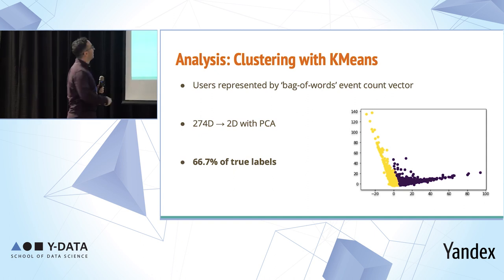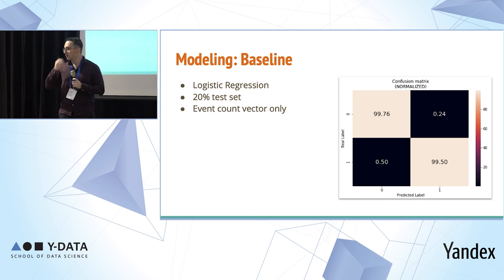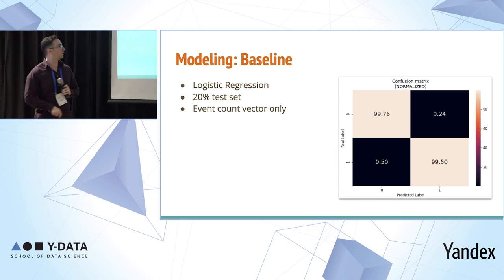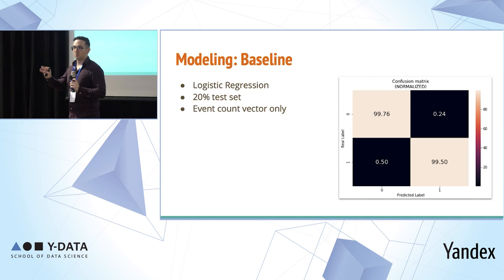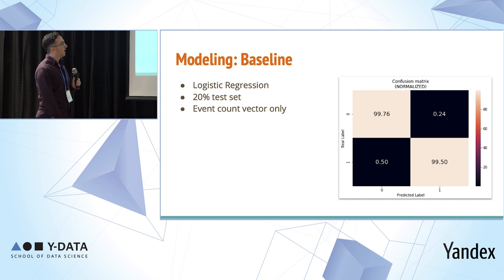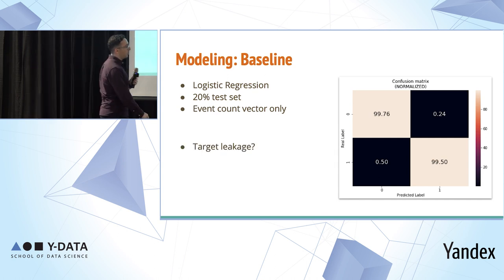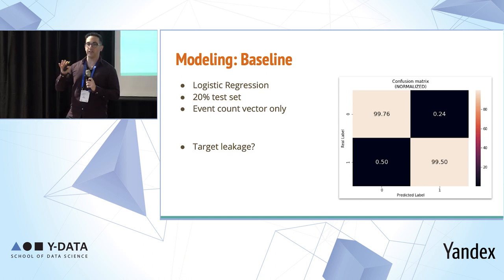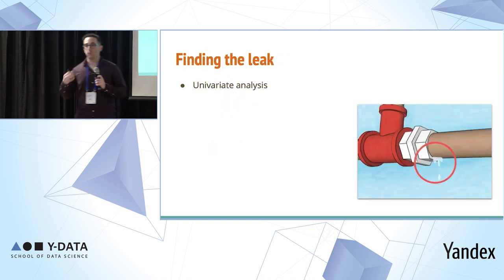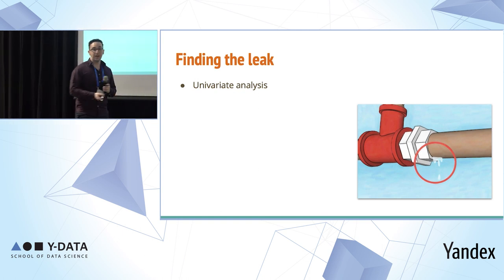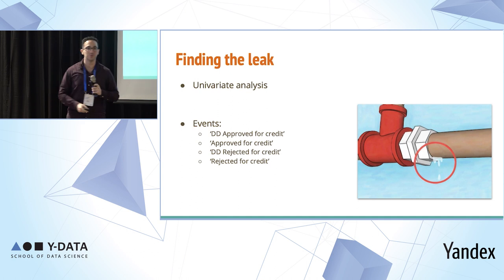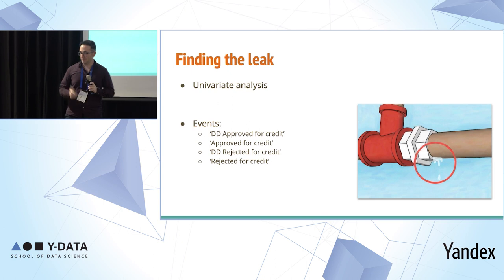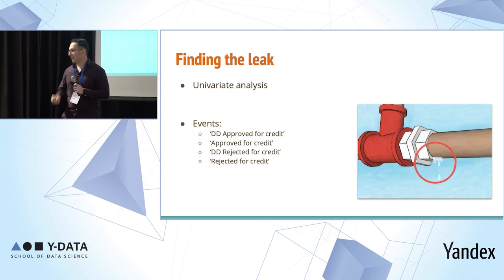We created a baseline model using logistic regression with the event count vector, and a 20% test set. The results showed 99.7% and 99.5% accuracy on the two labels — which immediately suggested target leakage. We did univariate analysis on each feature and found four features that directly indicated whether a client was approved or rejected for credit. After removing those, we ran further models.